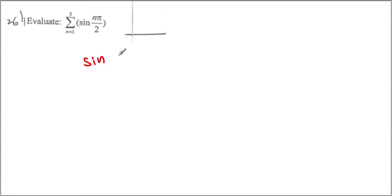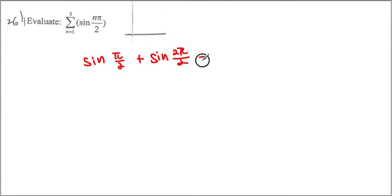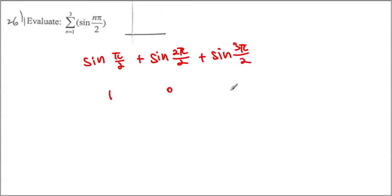The first term is sin(π/2) plus sin(2π/2) plus sin(3π/2). So sin(π/2) equals 1, sin(2π/2) gives 0, and sin(3π/2) gives negative 1. Once you add them up, everything turns out to be 0.